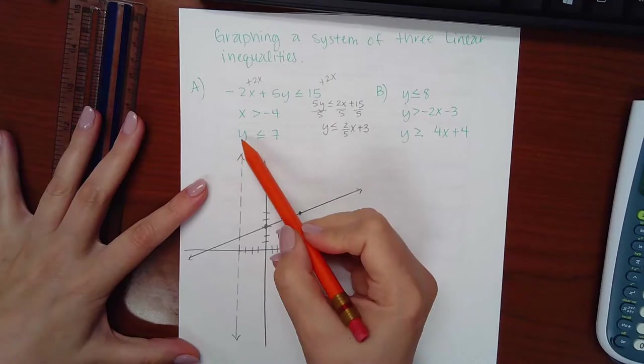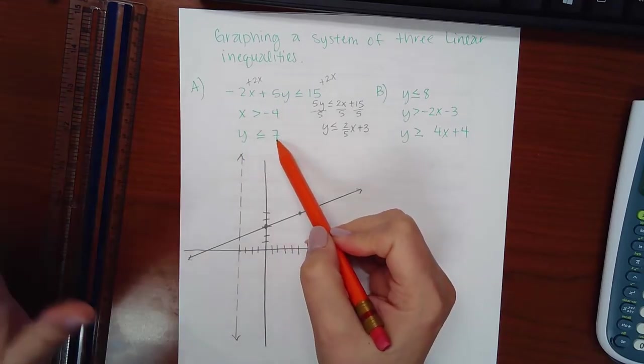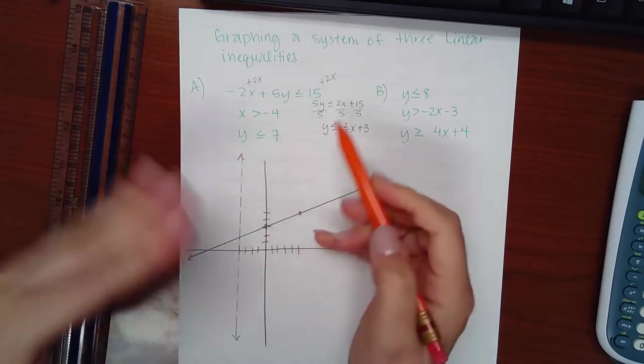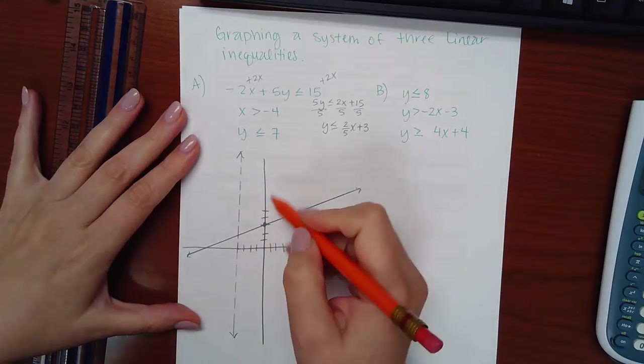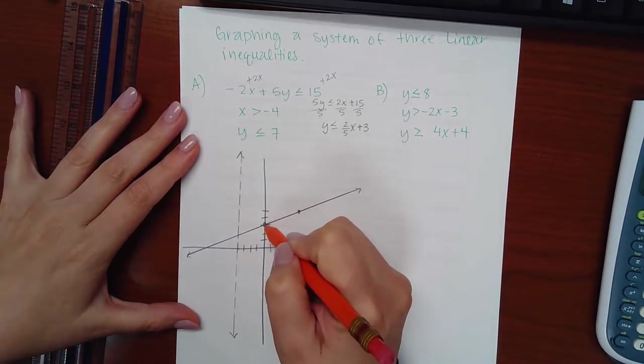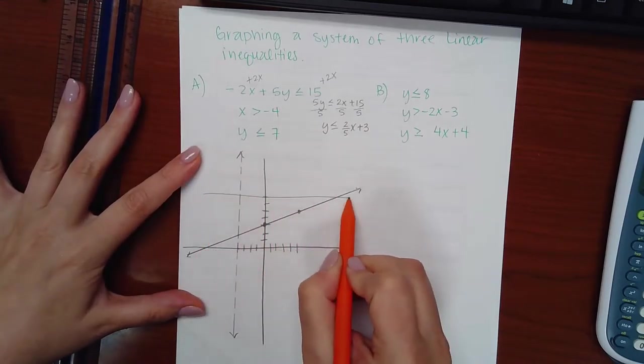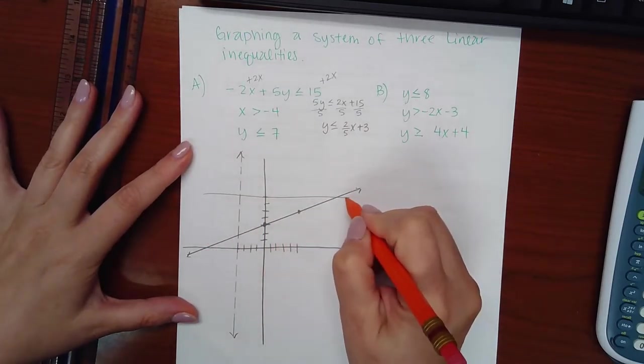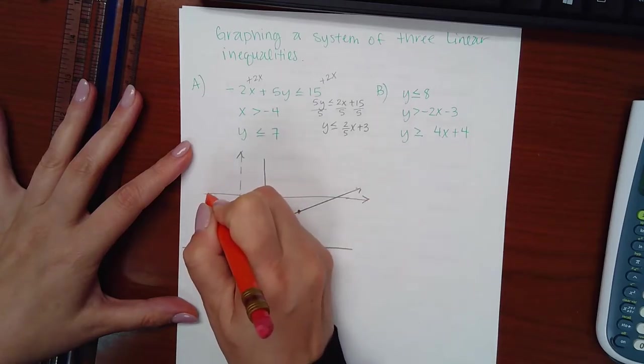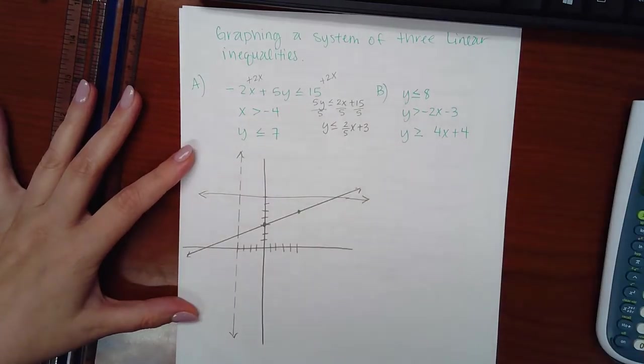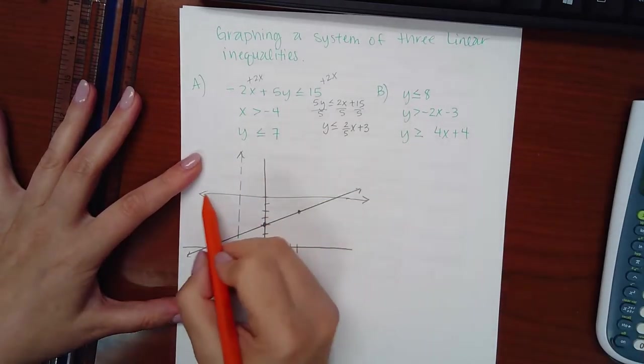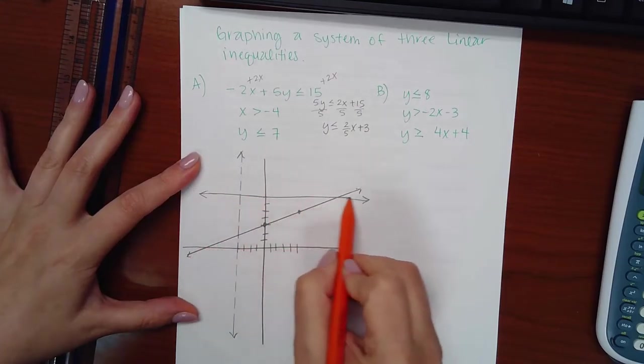Now the bottom one, when you have y and a number with no x's, y and a number is going to be a horizontal line at 7, positive 7. Which means I'm going to have a horizontal line going this way. And this one does have a bar, so it should be solid, not dotted.